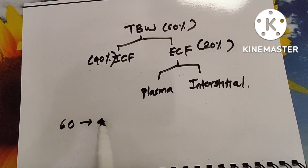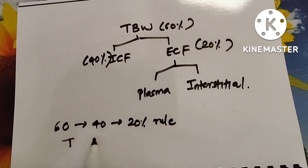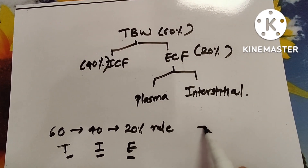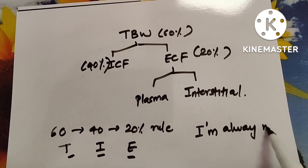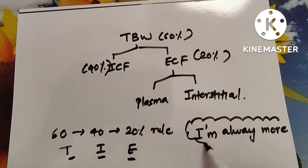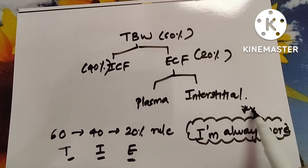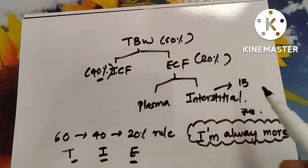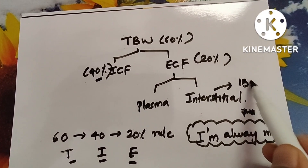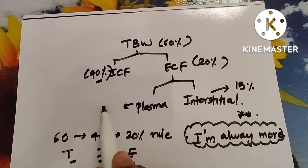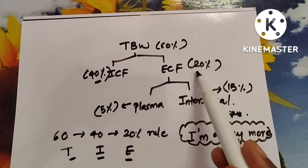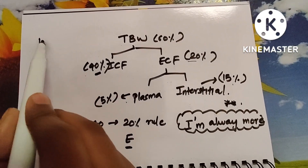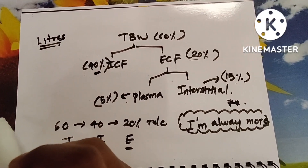There is a rule called the 60-40-20 rule: 60% of the whole body's composition is total body water, out of which 40% is ICF and 20% is ECF. Remember it as TBW → ICF → ECF. 'I am always more' — among interstitial fluid and ICF, ICF is more at 40%, and among interstitial fluid and plasma, interstitial fluid is 15% and plasma is 5%. So 15% plus 5% of interstitial and plasma constitute 20% ECF, and 20% plus 40% constitute total body water at 60%.